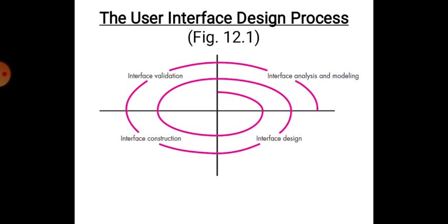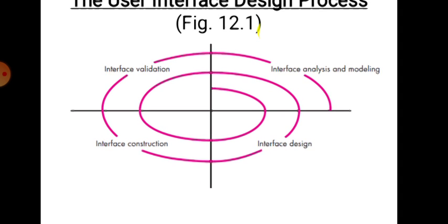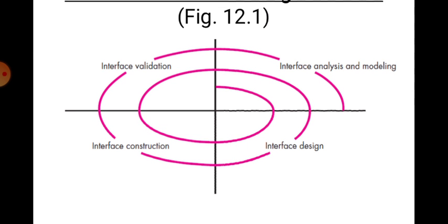This slide shows the spiral model. The process begins with four quadrants: the top right represents interface analysis and modeling, the bottom right represents interface design, the bottom left represents interface construction, and the top left represents interface validation. Each pass around the spiral represents additional elaboration of the requirements and the resultant design.